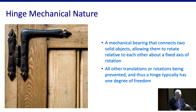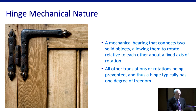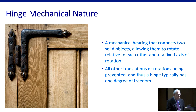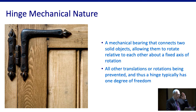We need to define what hinges are, and especially what is the mechanical nature of hinges. It's a mechanical bearing device that connects two solid objects, allowing them to rotate relative to each other about a fixed axis of rotation. Two parts connect together with a common axis of rotation, so one part rotates around another part. Importantly, all other translations or rotations are prevented, and thus a hinge typically has only one degree of freedom, directing movement while eliminating undesirable movements or translations.